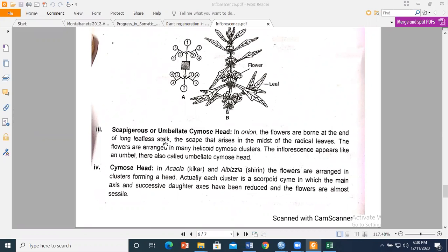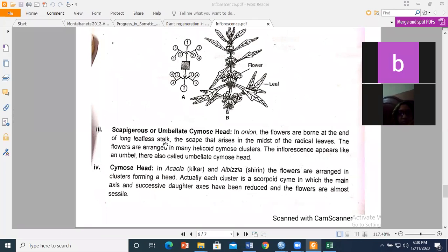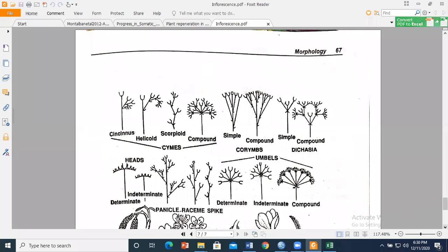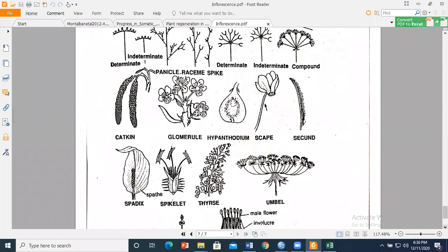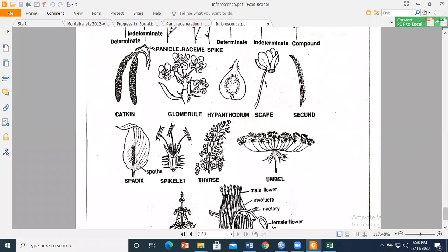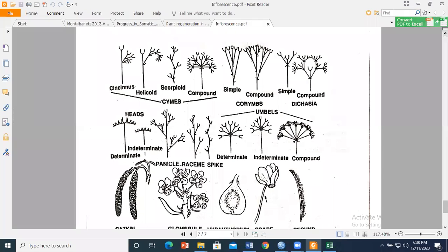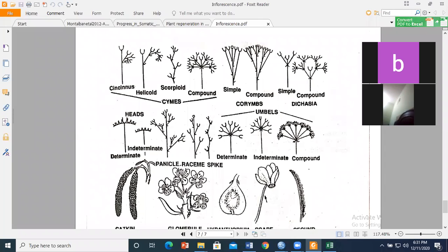Cymose head: in Acacia (kikar) and other species, flowers are arranged in clusters in the form of a head. Actually, the cluster is a scorpioid cyme in which the main axis and successive daughter axes have been reduced and the flowers are almost sessile. These are some diagrams that you can see. This is scorpioid cyme, compound arrangement, spike, and panicle as examples of what we've studied.